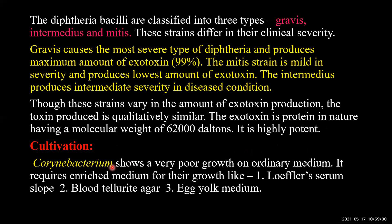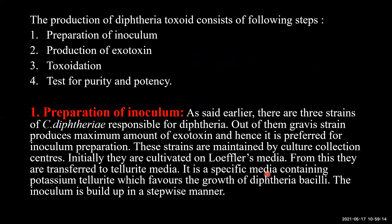Corynebacterium diphtheriae shows very poor growth on ordinary media and hence requires enriched media for growth, such as Löffler's serum slope, blood tellurite agar, or egg yolk agar. The production of diphtheria toxoid is divided into the following steps: preparing the inoculum, production of exotoxin, toxoidation of the exotoxin, and testing for purity and potency.